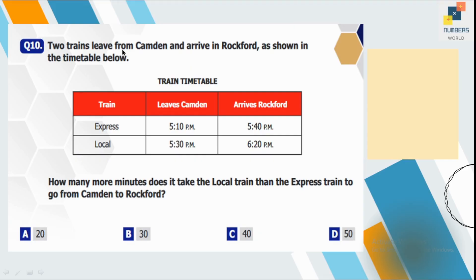Question number 10. Do trains leave from Camden and arrive to Rockford as shown in the timetable below? How many more minutes does it take the local train than the express train to go from Camden to Rockford? So again, it's a question of comparison. So let's count the time first. So express train took 30 minutes to arrive at Rockford from Camden and the local train took 50 minutes. So we will find the difference between the timings. So it means 50 minus 30 is equal to 20. So the local train took 20 minutes extra to arrive at Rockford from Camden.